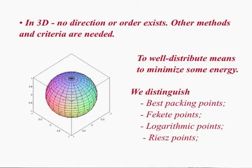It turns out we have a whole bunch of problems that start here. One is best packing points — we'll see this application in biology. Fekete, a Hungarian mathematician, defined Fekete points — actually how electrons distribute. Logarithmic points come naturally from computer science and complexity of algorithms. One of the Fields medalists — that's the Nobel Prize equivalent in mathematics — raised finding points that minimize the so-called logarithmic energy as one of the problems for the 21st century. And then there are the more general Riesz points, which encompass all three as partial results.